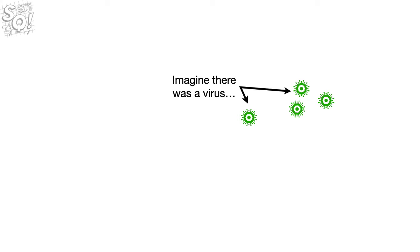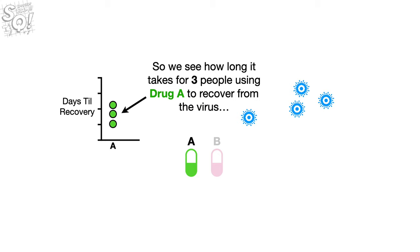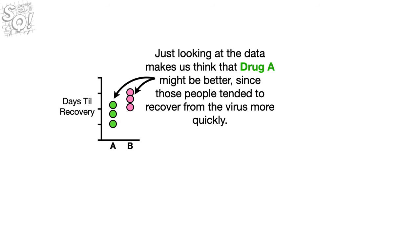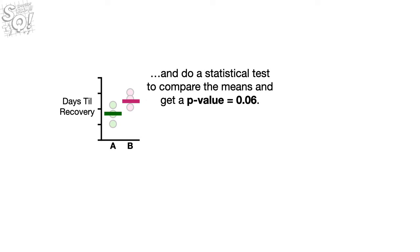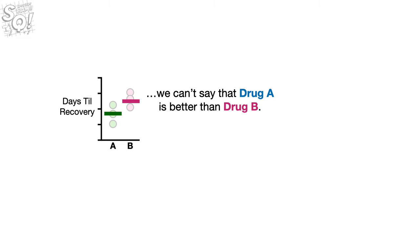Imagine there was a virus, and we had two drugs that we could use to treat it. So we see how long it takes for three people using drug A to recover from the virus, and we see how long it takes three people using drug B to recover. Just looking at the data makes us think that drug A might be better, since those people tended to recover more quickly. So we calculate the means for both drugs and do a statistical test to compare the means and get a p-value equal to 0.06. Because the p-value is greater than 0.05, the threshold we are using to define a statistically significant difference, we can't say that drug A is better than drug B.